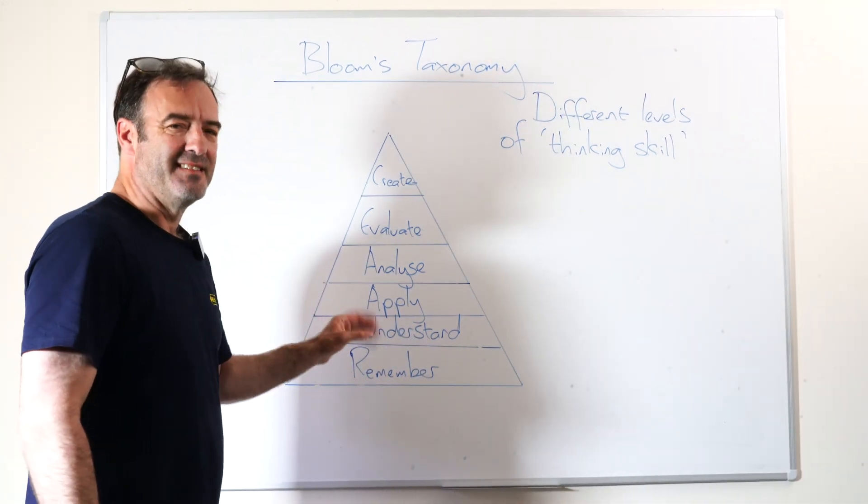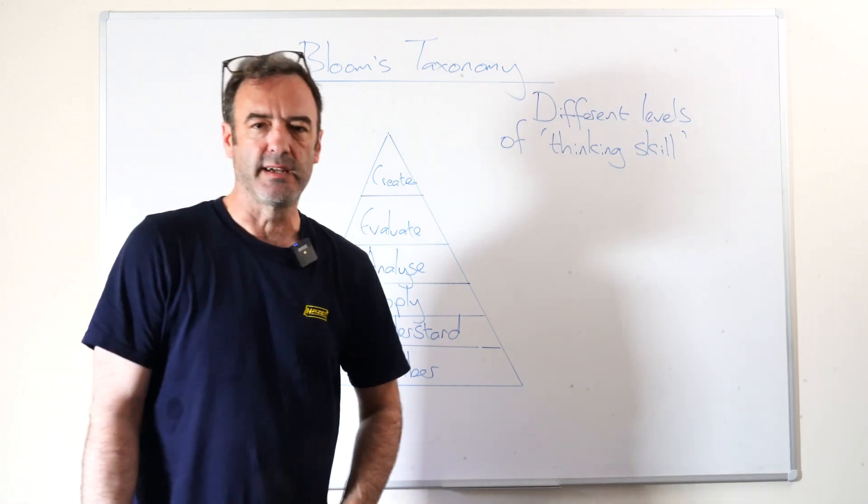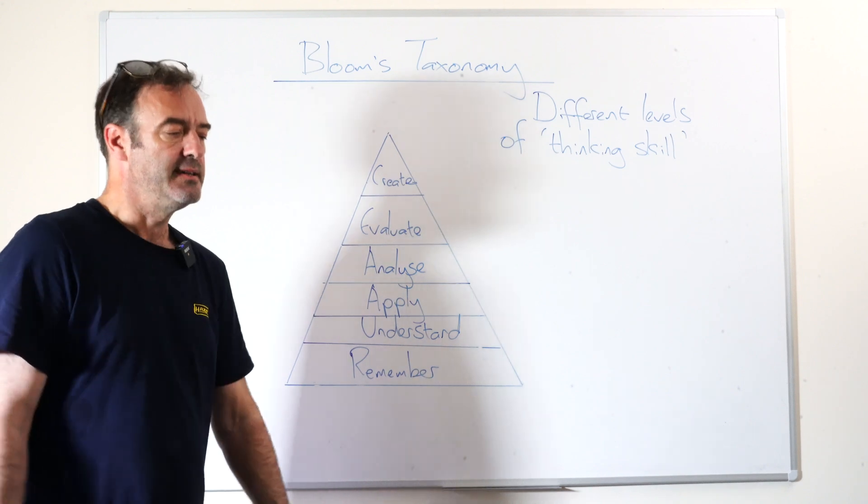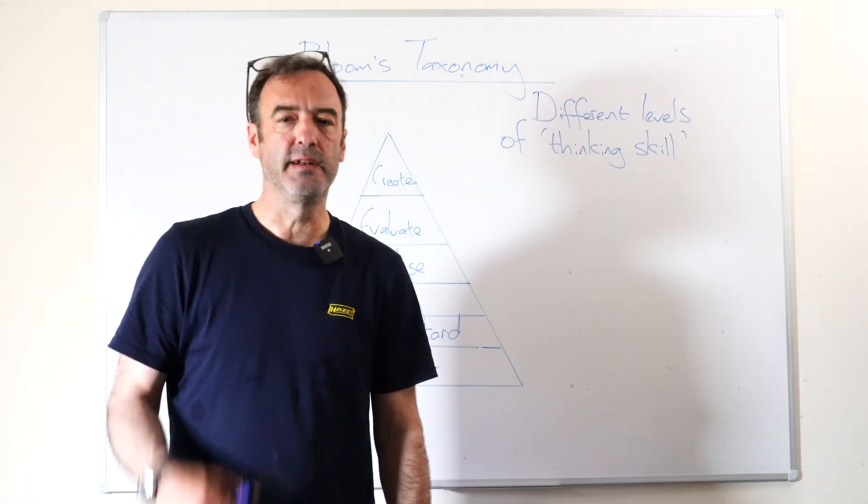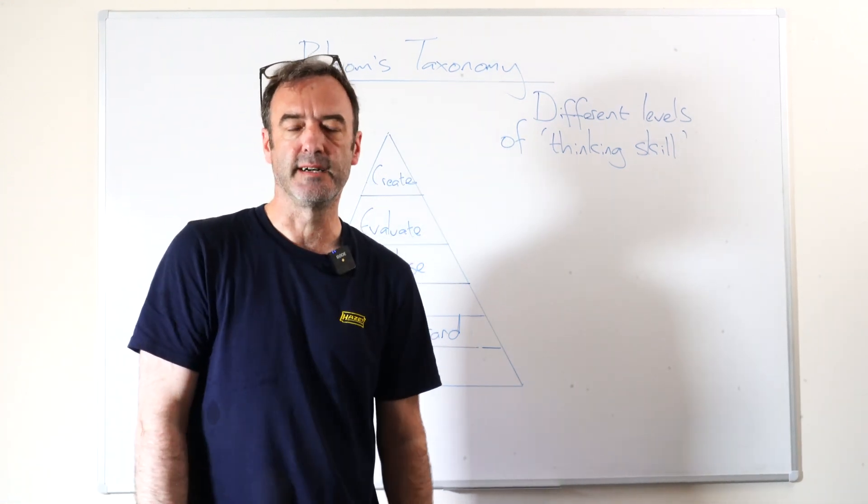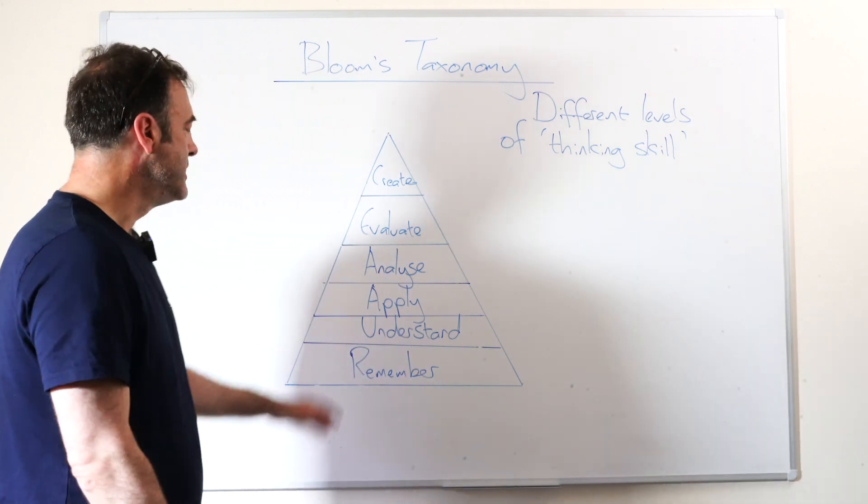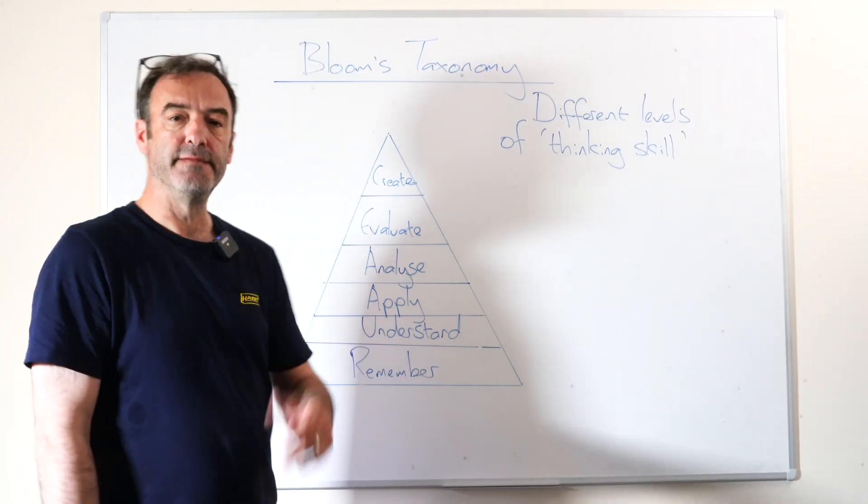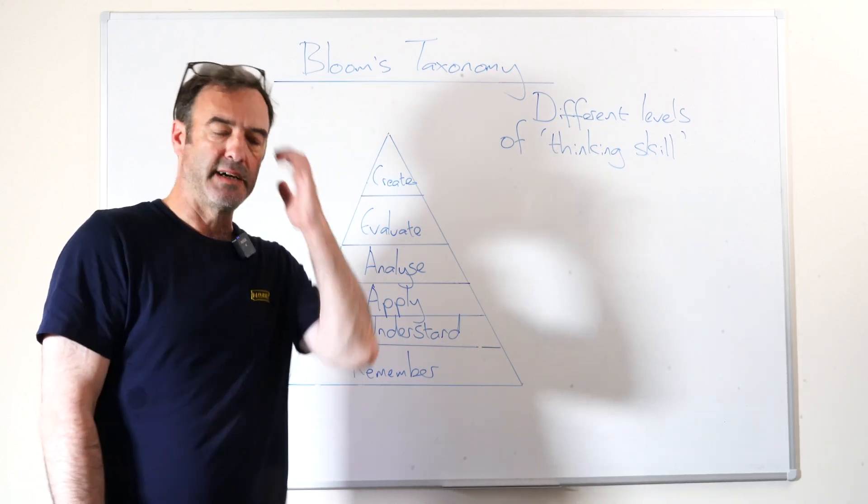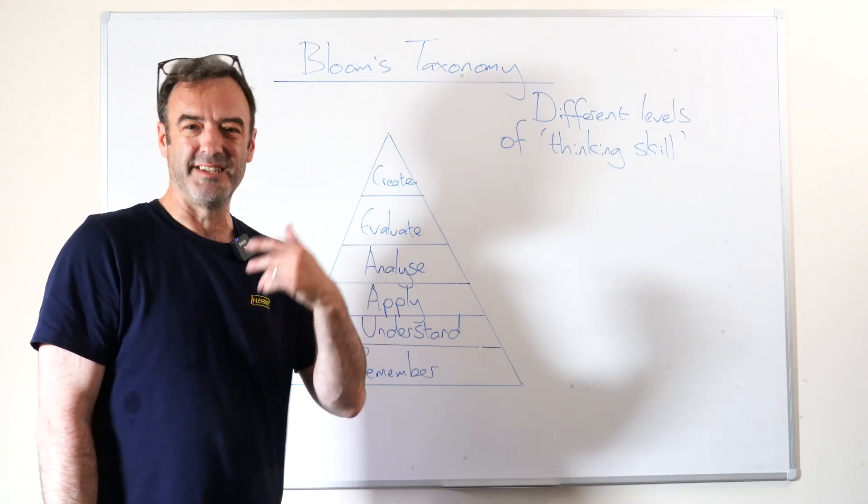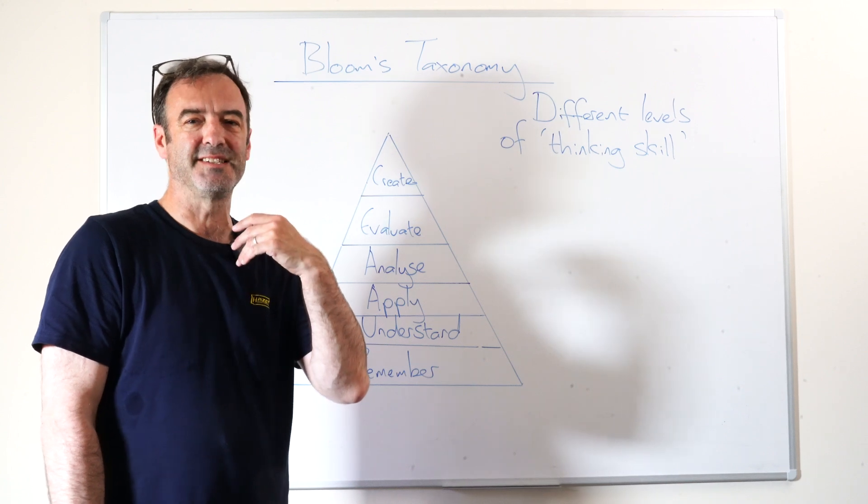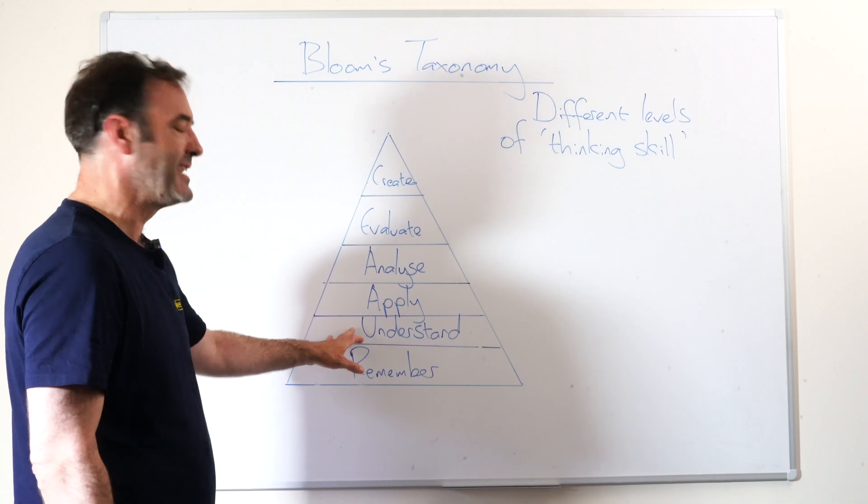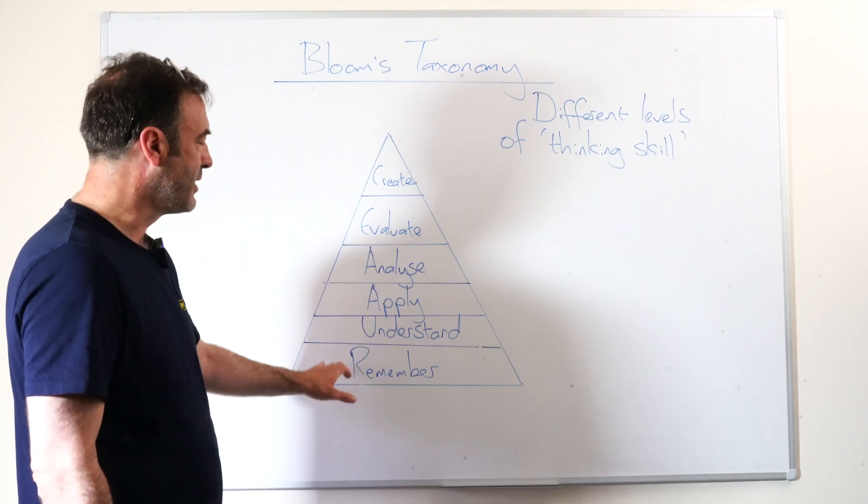At the very base of this, the most basic task we can ask a kid to do is remember something, just recall. In a comprehension task, this could be pulling out facts from a piece of text. To understand is more to do with inference, reading a piece of writing and drawing meaning, reading between the lines to understand what's going on in the text. That comes above remembering.